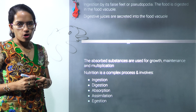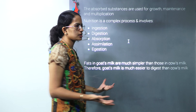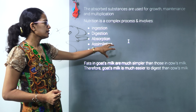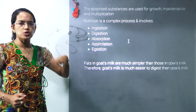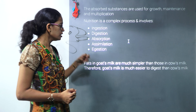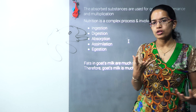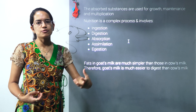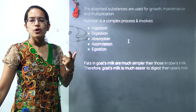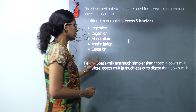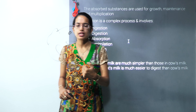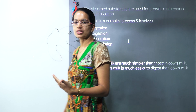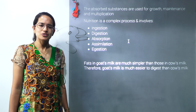Broadly, nutrition is a complex process. It requires ingestion of food, digestion, absorption in the small intestine, and assimilation in the large intestine. An interesting fact: goat milk is much lighter than cow's milk because the fats in goat's milk are simpler and easier to digest. Babies who are unable to digest cow's milk are often started on goat's milk. Do subscribe to the channel and leave any doubts in the comments below. Have a very good day ahead.